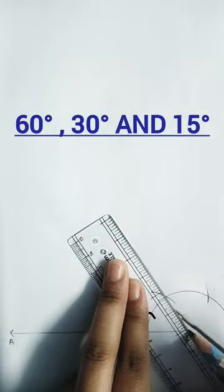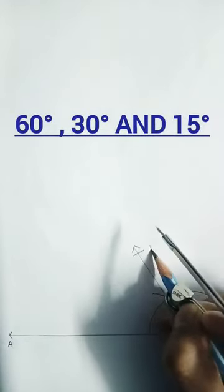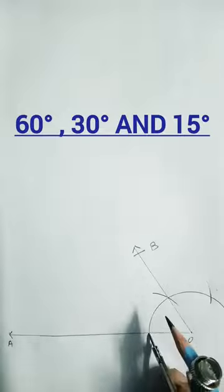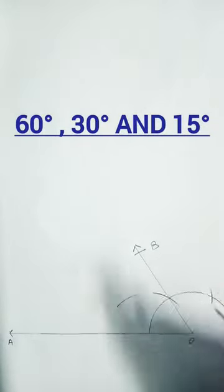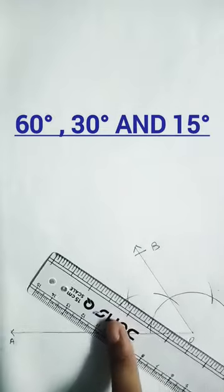So for 60°, draw a line, call it B. This is 60° ready. Now keep this distance and draw two arcs to make half of it by bisection for 30°. Join this to make 30° angle, so this is a new angle, 30°.